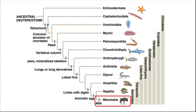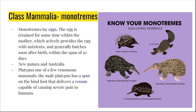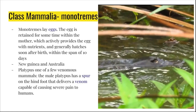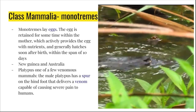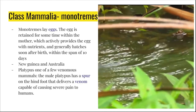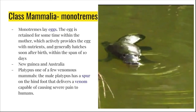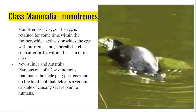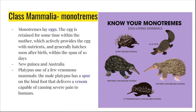The last taxonomic group we'll cover are the mammals. One important feature of mammals is that they create milk. The monotremes are a group of mammals that lay eggs. The egg is retained for some time within the mother, which actively provides the egg with nutrients. The monotremes occur in New Guinea and Australia. The platypus is a monotreme that is one of the few venomous mammals. The male platypus has a spur on the hind foot that delivers venom capable of causing severe pain to humans. To the right you can see several different examples of monotremes, including several species of echidna and the platypus.